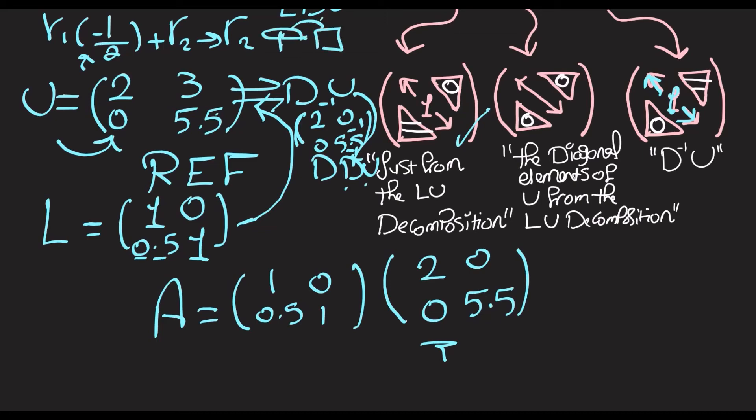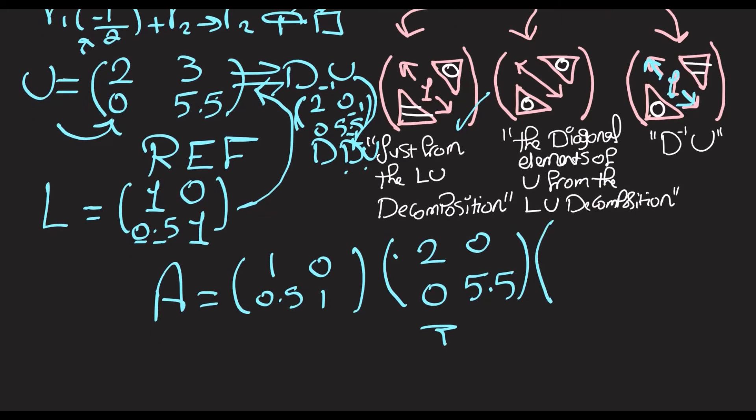So here we're going to just divide U by the corresponding element in D. I hope this is not confusing - it's just multiplying D inverse by U.